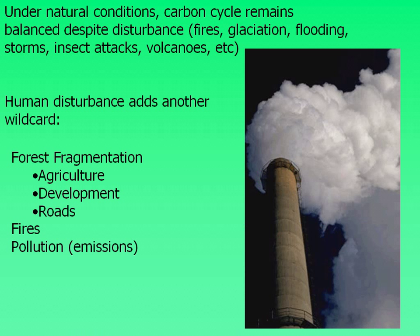Under natural conditions this cycle remains pretty balanced, even when we have major disturbances like major fires, the last glacial periods, the last ice ages, major floods, and enormous volcanic eruptions. The ecosystem is able to recover over time and get back to that balance or equilibrium.